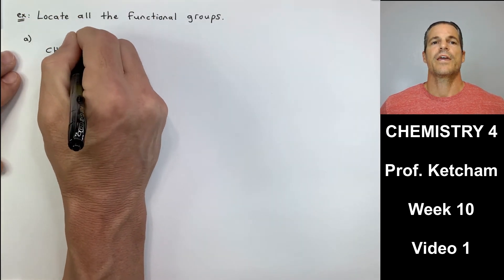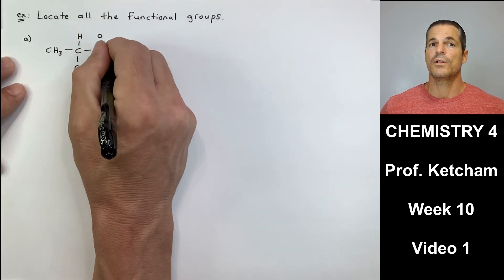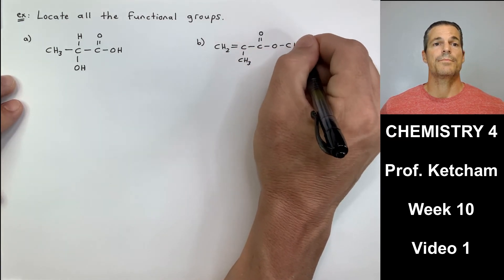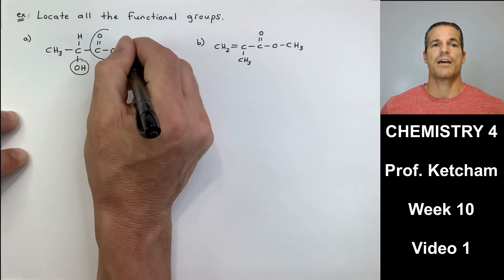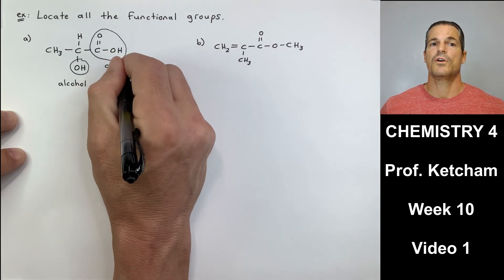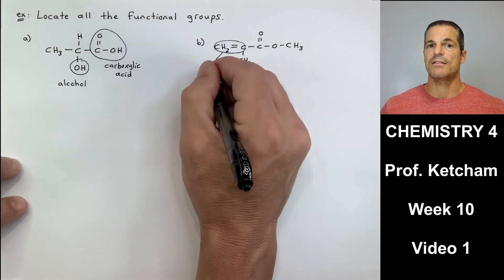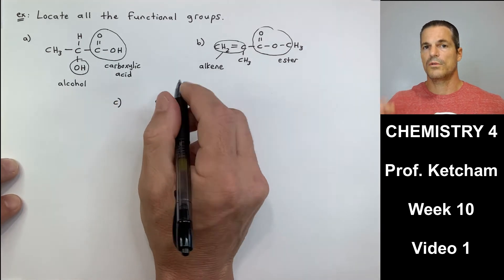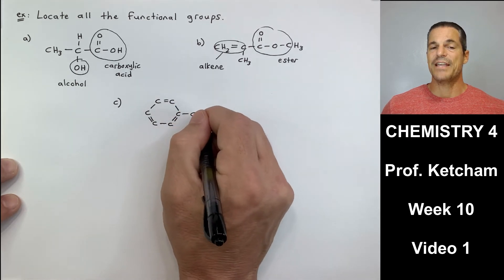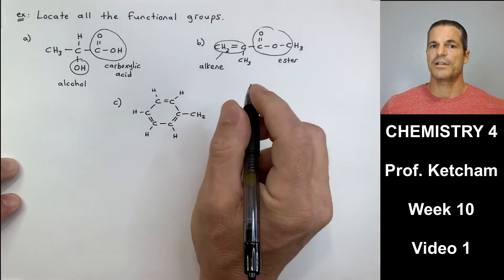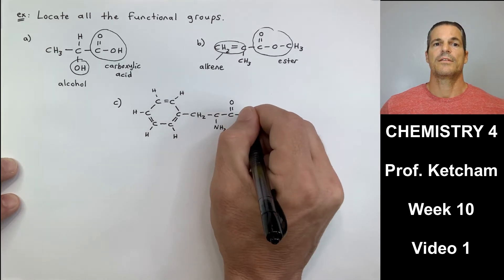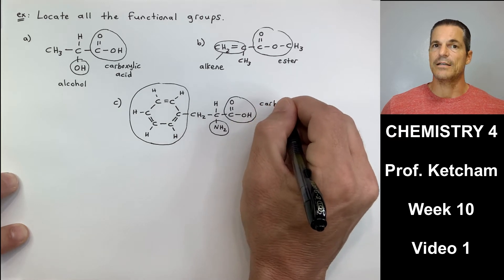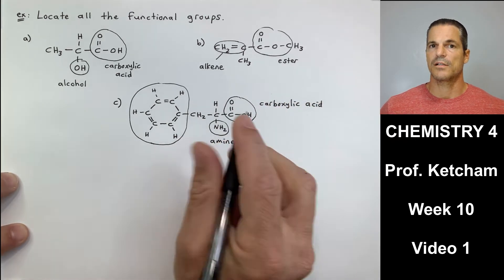Here's an example: locate all the functional groups. In A, I see an OH group — that's an alcohol — and a carboxylic acid group, the C=O with an OH. Circle and label them. In B, there's an alkene — a carbon double bond — and an ester, which is a C=O then an O with a carbon. In C, there's a benzene ring, which we call an aromatic ring functional group, an NH2 amine group, and a C=O with OH — a carboxylic acid.